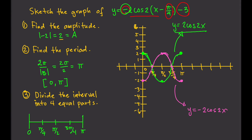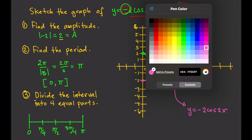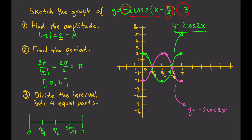We're not done yet, because we have a phase shift of pi over 4 and a vertical shift of negative 3. We're going to move pi over 4 units to the right. Note that the sign inside should be negative — since it is negative, the phase shift is to the right. If it were positive, the shift would be to the left.